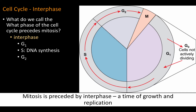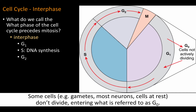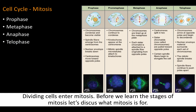Mitosis is preceded by interphase, a time of growth and replication. Some cells, for example gametes, most neurons, and cells at rest, don't divide, entering what is referred to as G0. Dividing cells enter mitosis.